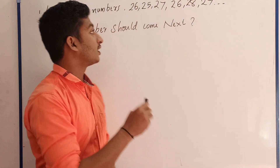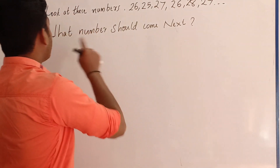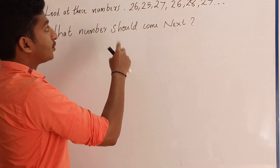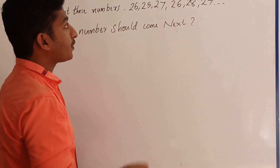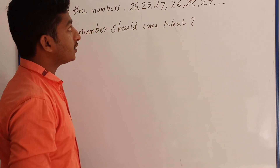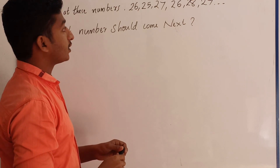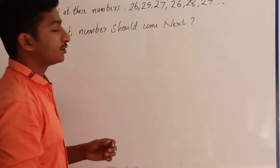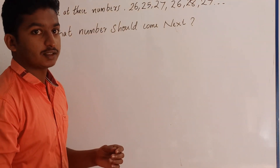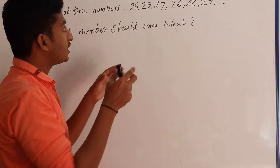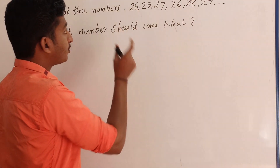First question: look at these numbers — 26, 25, 27, 26, 28, 27. What number should come next? This is a number series problem.